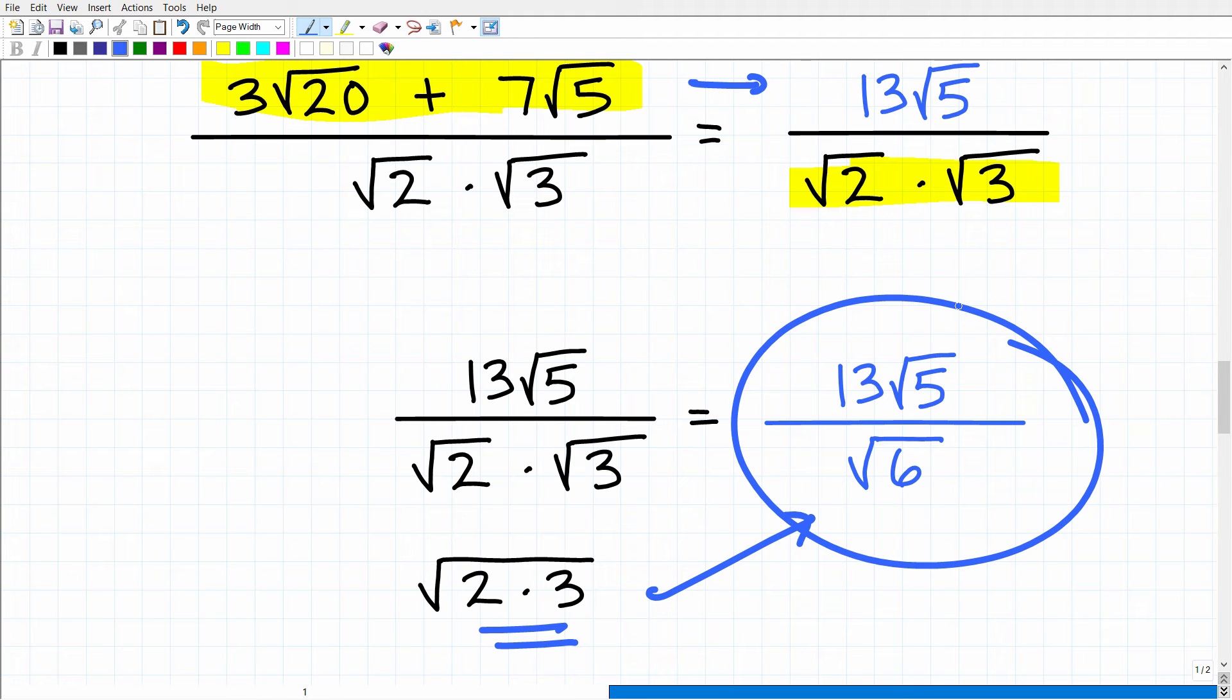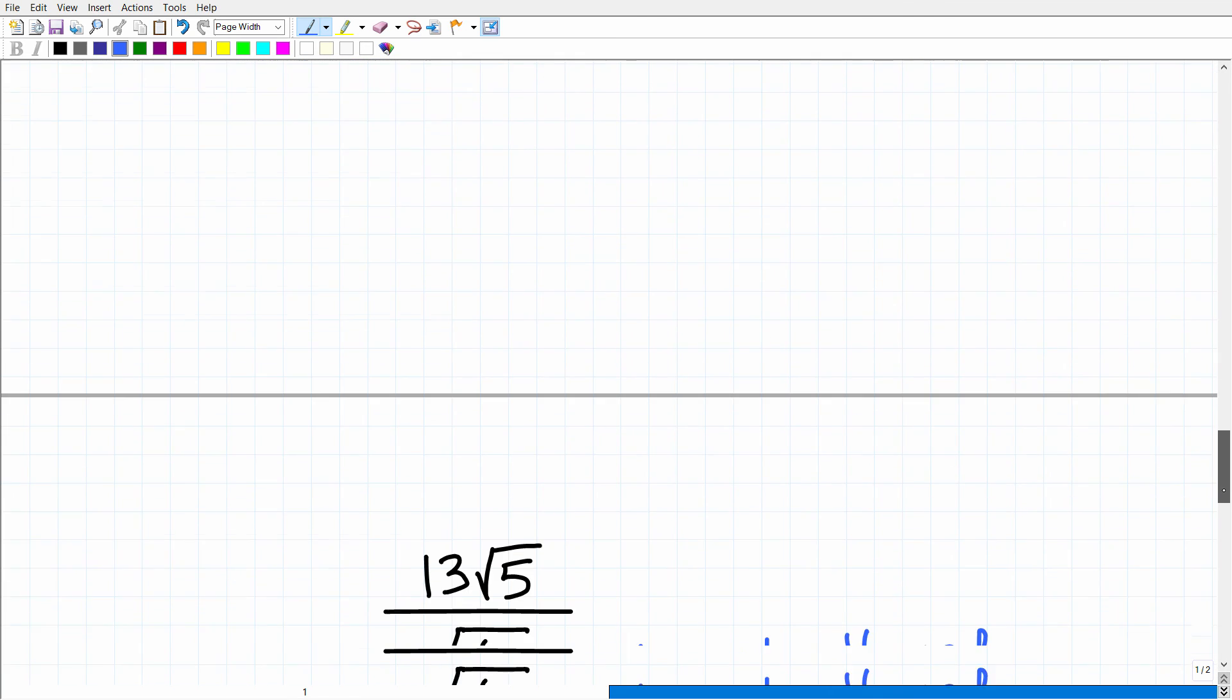Now, if you left your answer like this, well, that is not correct because we have a problem here. We have an irrational number in the denominator. Remember, you cannot leave your answer like that. This would be like if you have 3 over square root of 7. Well, this is not allowed. Okay, so we have to rationalize the denominator. Now, in this case, what you would do is you would multiply both the numerator and denominator by the square root of 7. So that's what we're going to have to do here. We're going to have to rewrite this.